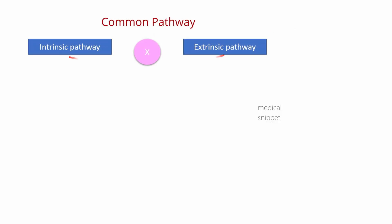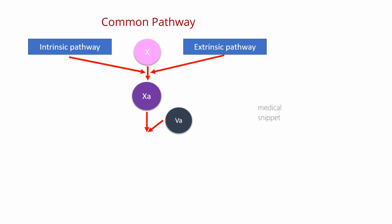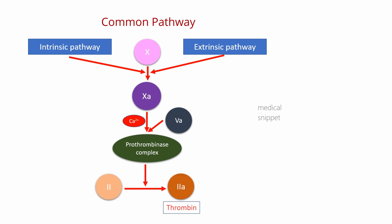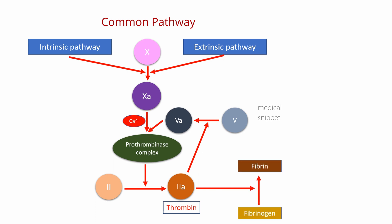The common pathway begins when factor X is activated to factor Xa. Once factor Xa is formed, it binds with factor Va and calcium to form a prothrombinase complex. This prothrombinase complex then activates prothrombin to thrombin — in other words, it activates factor II to factor IIa. One molecule of factor Xa can catalyze the formation of a thousand thrombin molecules. It should be noted that factor V is activated by factor IIa, that is thrombin. Then thrombin cleaves soluble fibrinogen, that is factor I, into insoluble fibrin subunits.